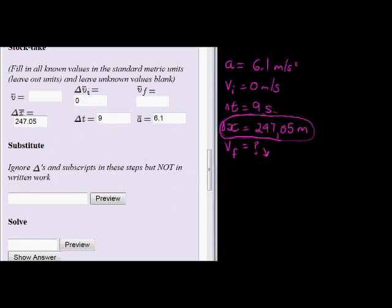Let's substitute into the formula that I said I wanted to use. I want to use the future velocity is equal to the initial velocity plus A delta T. My initial velocity being 0 meters per second, my acceleration being 6.1 meters per second squared, and my time being 9 seconds.